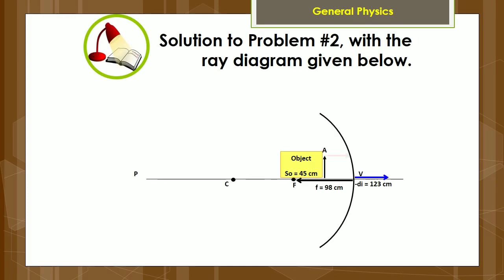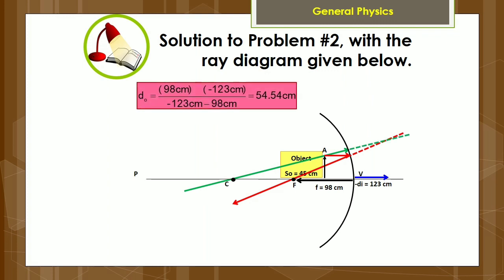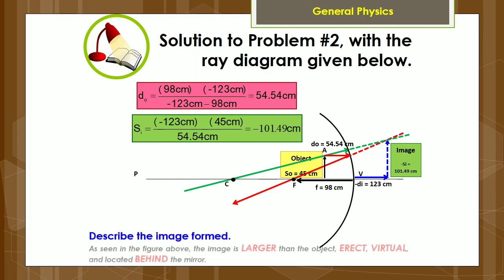Here is the solution to problem number two, with the ray diagram given below. As seen in the figure above, the image is larger than the object, erect, virtual, and located behind the mirror.